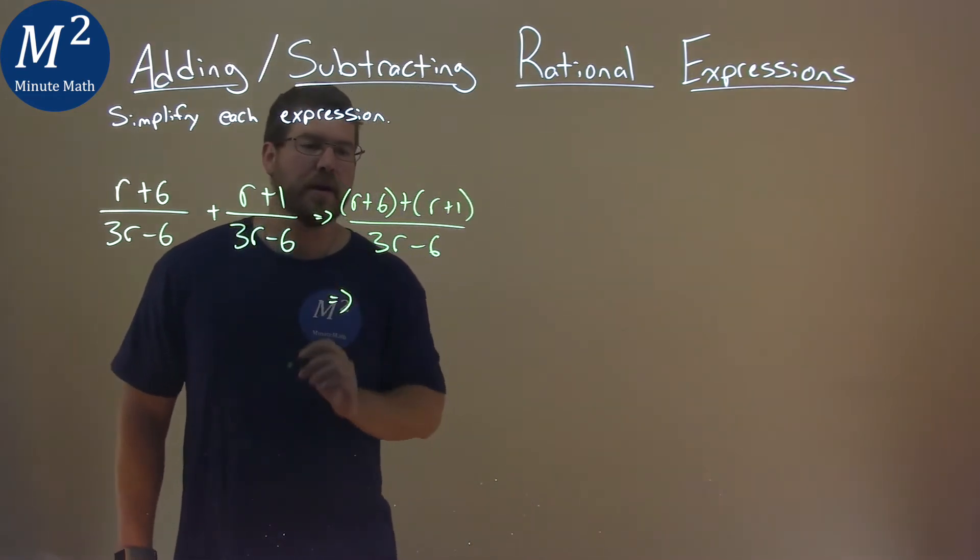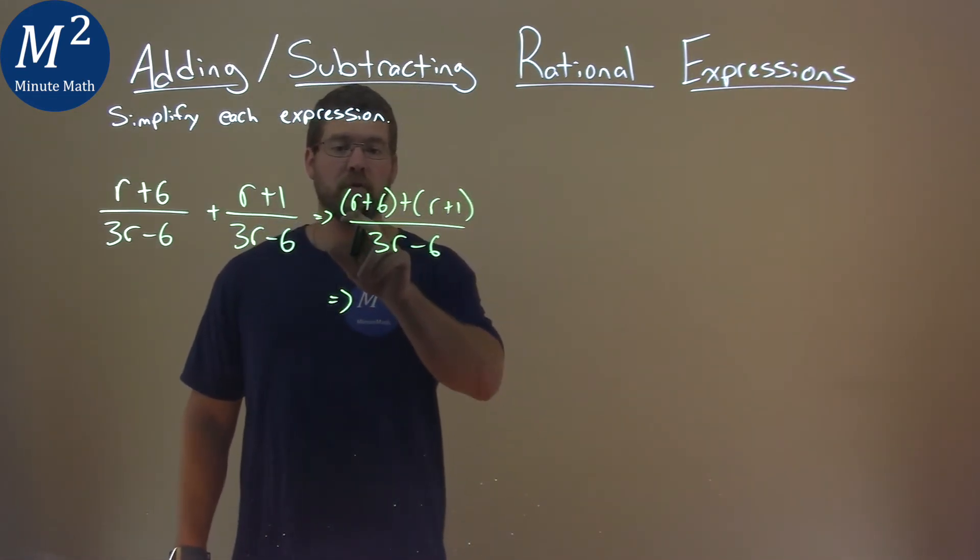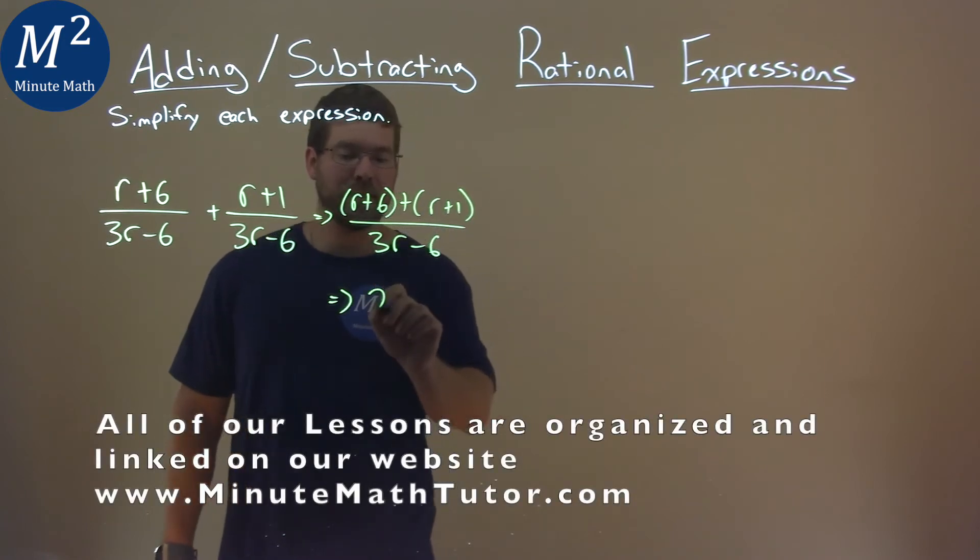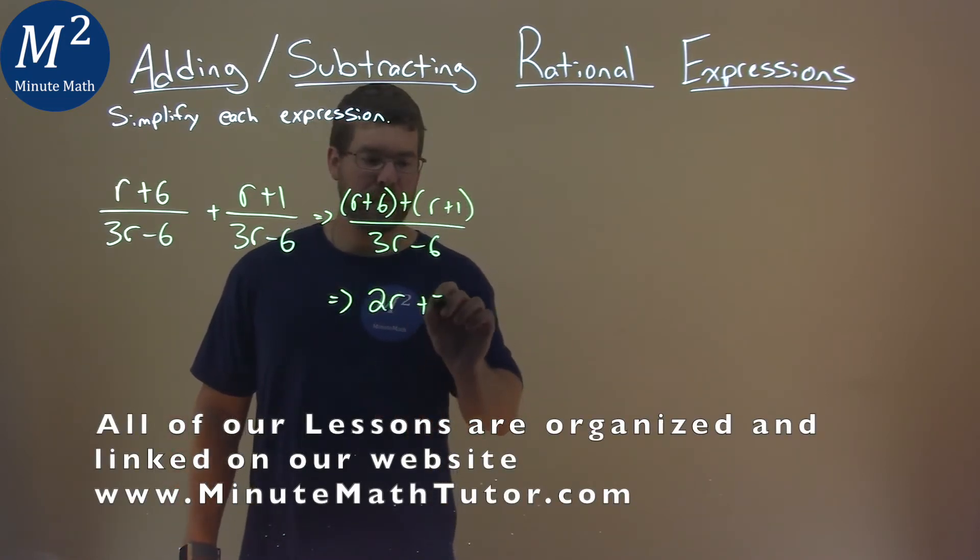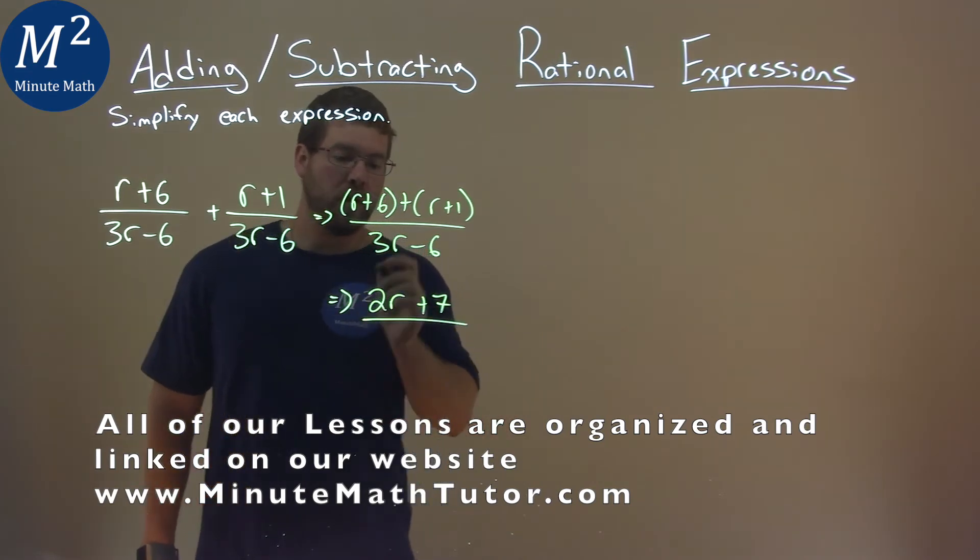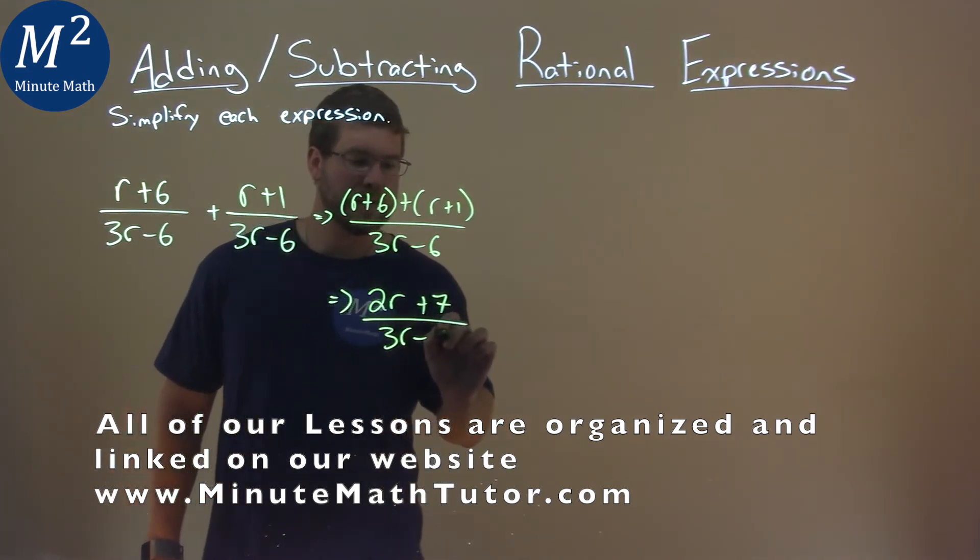So now let's combine our like terms. We have our r's. r plus 1r is 2r. 6 plus 1 is 7. And that's going to be all over 3r minus 6.